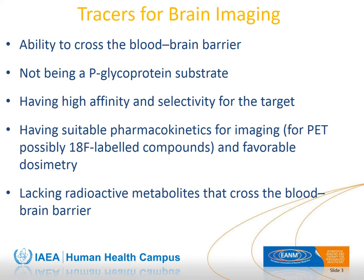The most important characteristics of PET and SPECT tracers for brain imaging include: ability to cross the blood-brain barrier, not being a P-glycoprotein substrate, having high affinity and selectivity for the target, suitable pharmacokinetics in terms of observed uptake and washout, a favorable dosimetry, and lacking radioactive metabolites that also cross the blood-brain barrier.